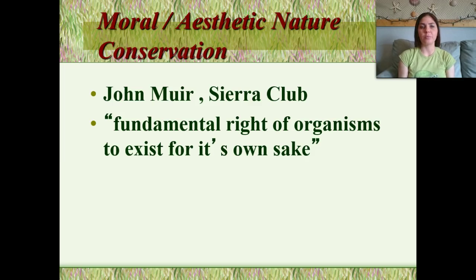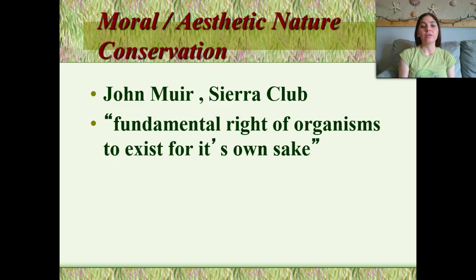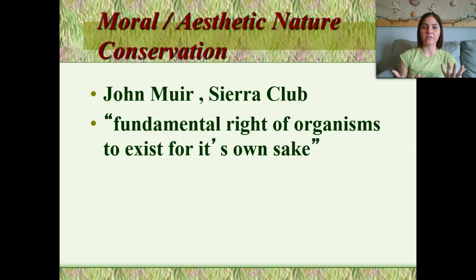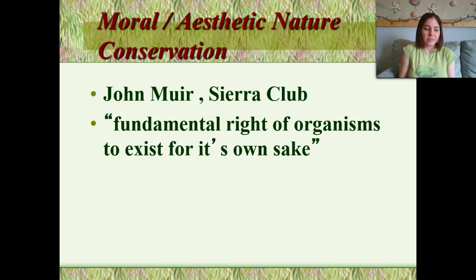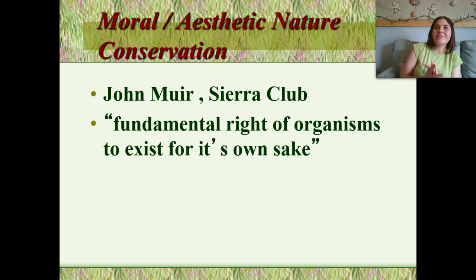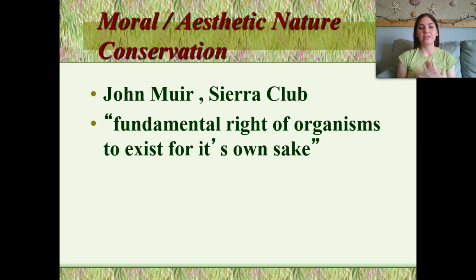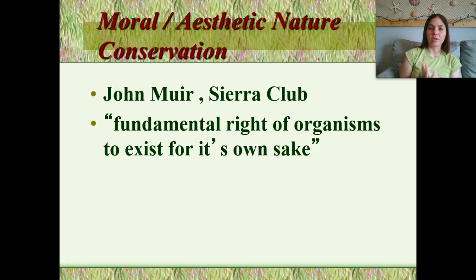John Muir is a huge environmentalist — he was the founder of the Sierra Club. He stated the fundamental right of organisms to exist for their own sake. So when we talk about aesthetic nature conservation, a lot of times as humans we want to preserve what is beautiful and aesthetically pleasing — we care about saving whales and dolphins because they're cute. But we need to be conscious of everything in nature, not just pick what survives based on what we find pretty.